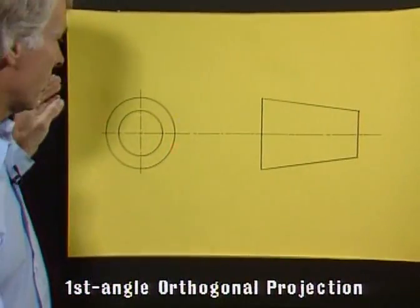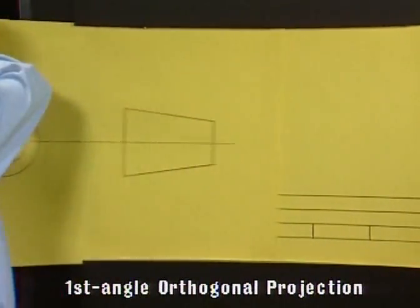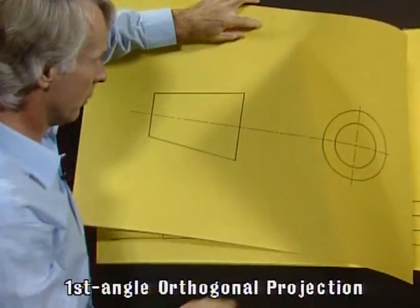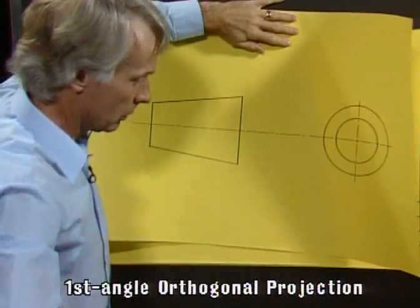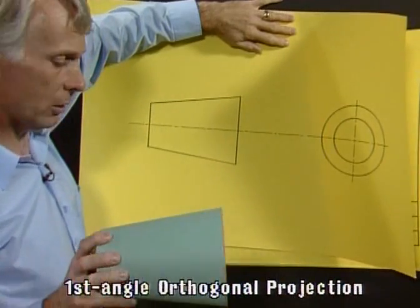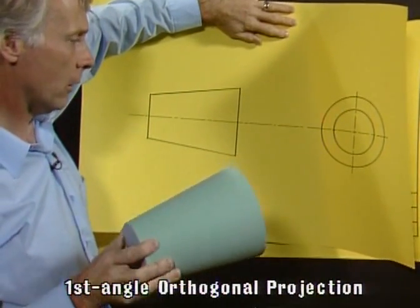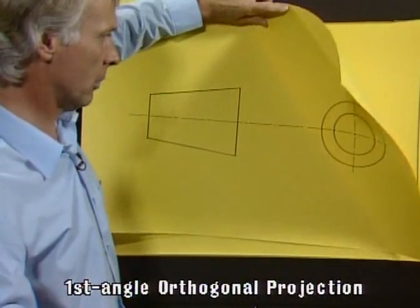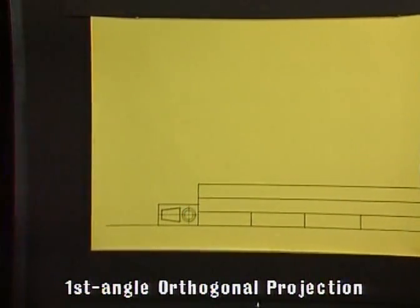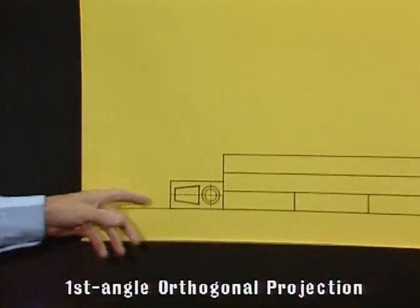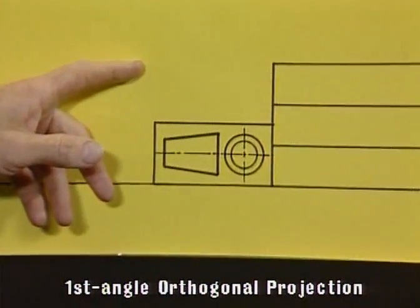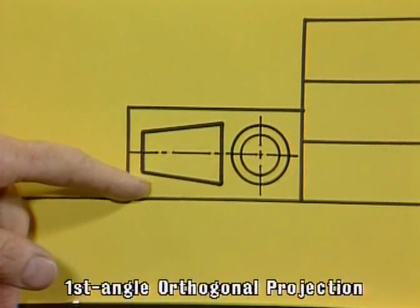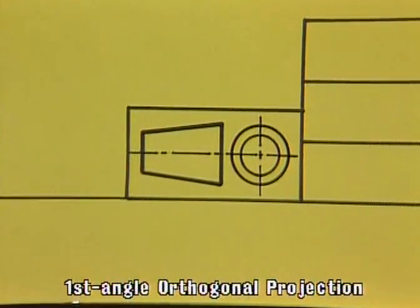It is the same if we show the symbol the opposite way up. If we had drawn the truncated cone originally in that position, then the two concentric circles would then be over on the right-hand side. And we've got that shown here on the title block in this symbol here, in this corner of the title block.